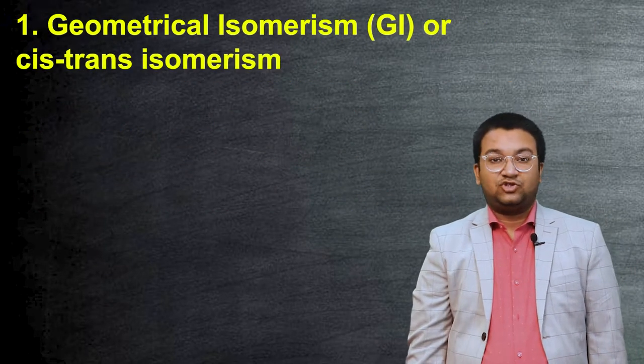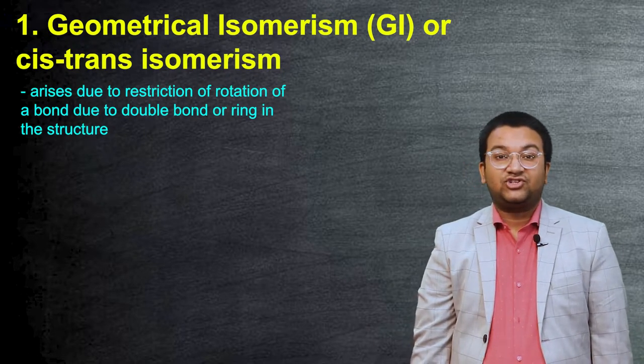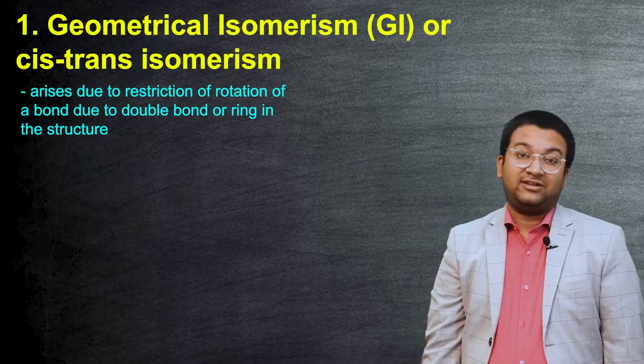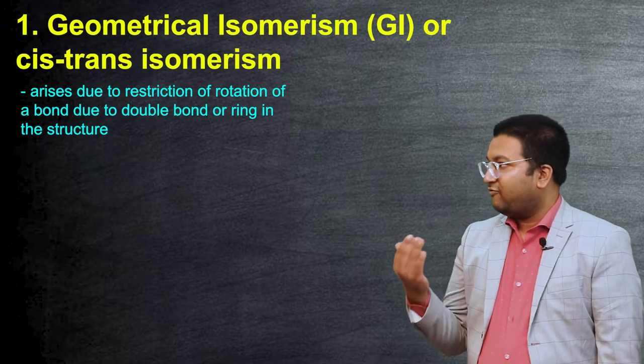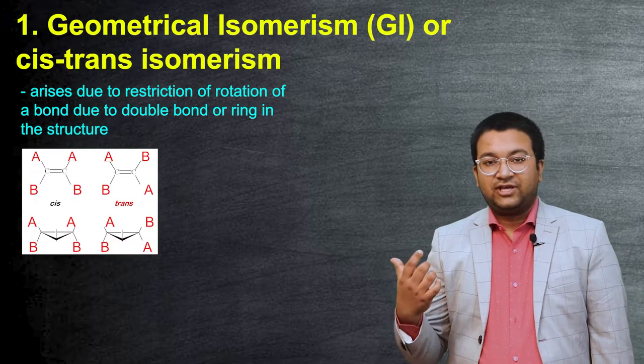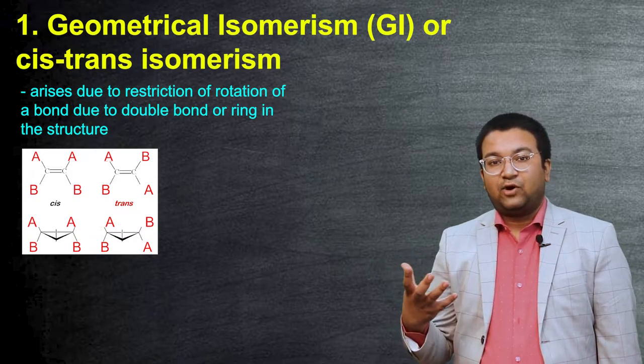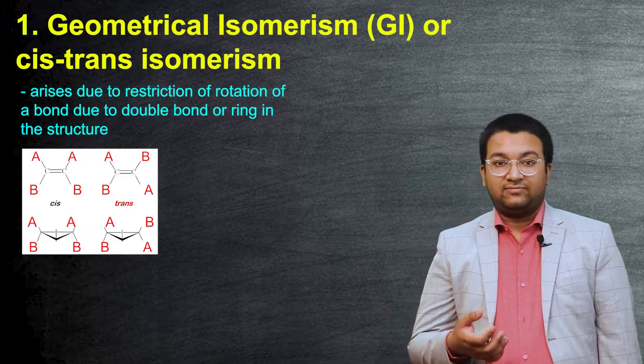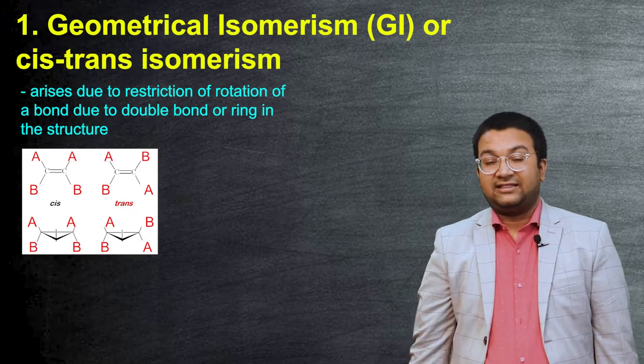The first one is geometrical isomerism. Geometrical isomerism arises in any compound due to restriction of rotation around any particular double bond or around a ring structure. Here we can see that the carbons on both of them have a double bond and therefore the bond is very difficult to rotate because double bonds are not easily twistable, so the atoms will be aligned in that array.